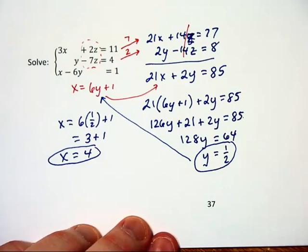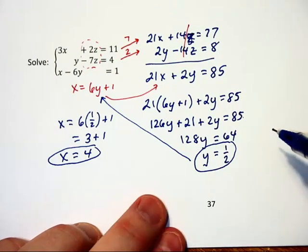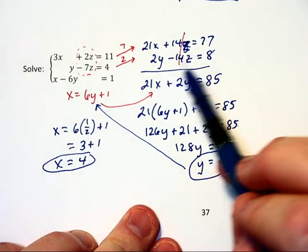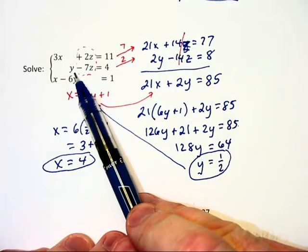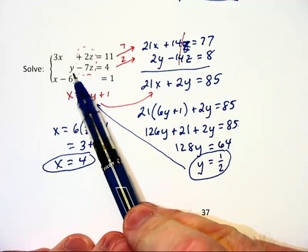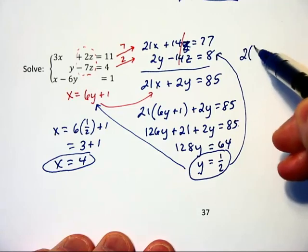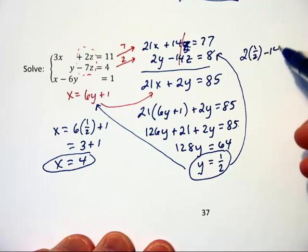Now we need to find out what z might be, and I'm going to choose to substitute into an equation. I'm looking for one with y and z. This original one does, but I don't want to plug 1 half in. So let's go up to this line here.